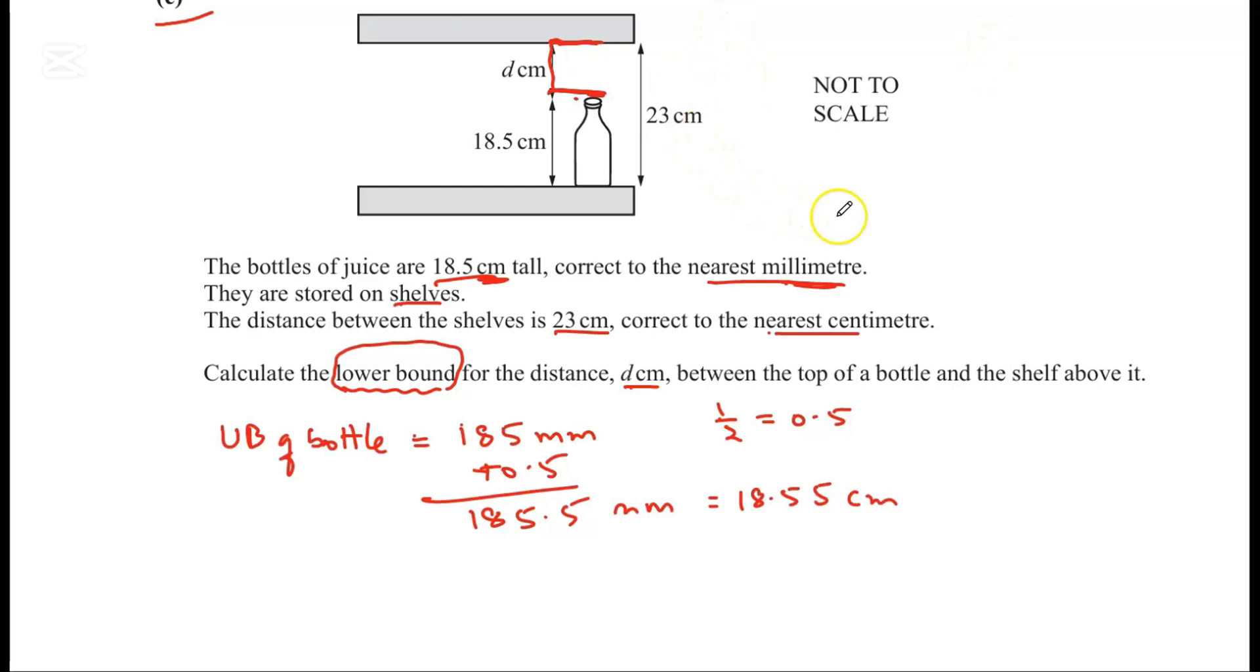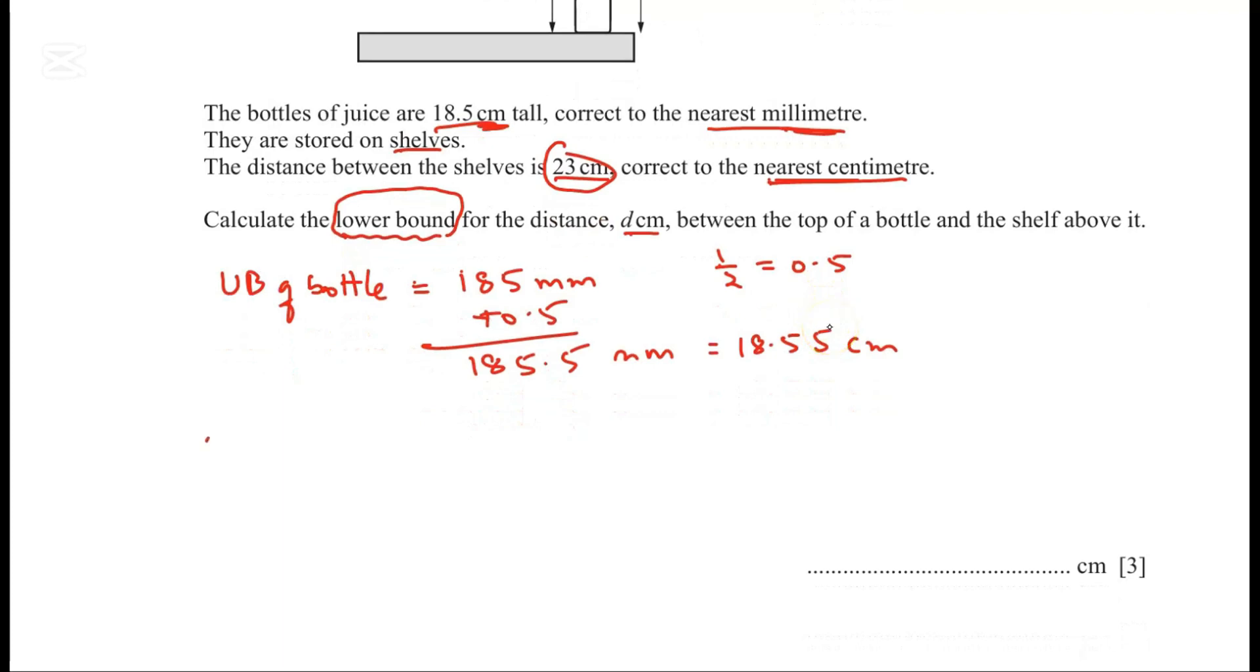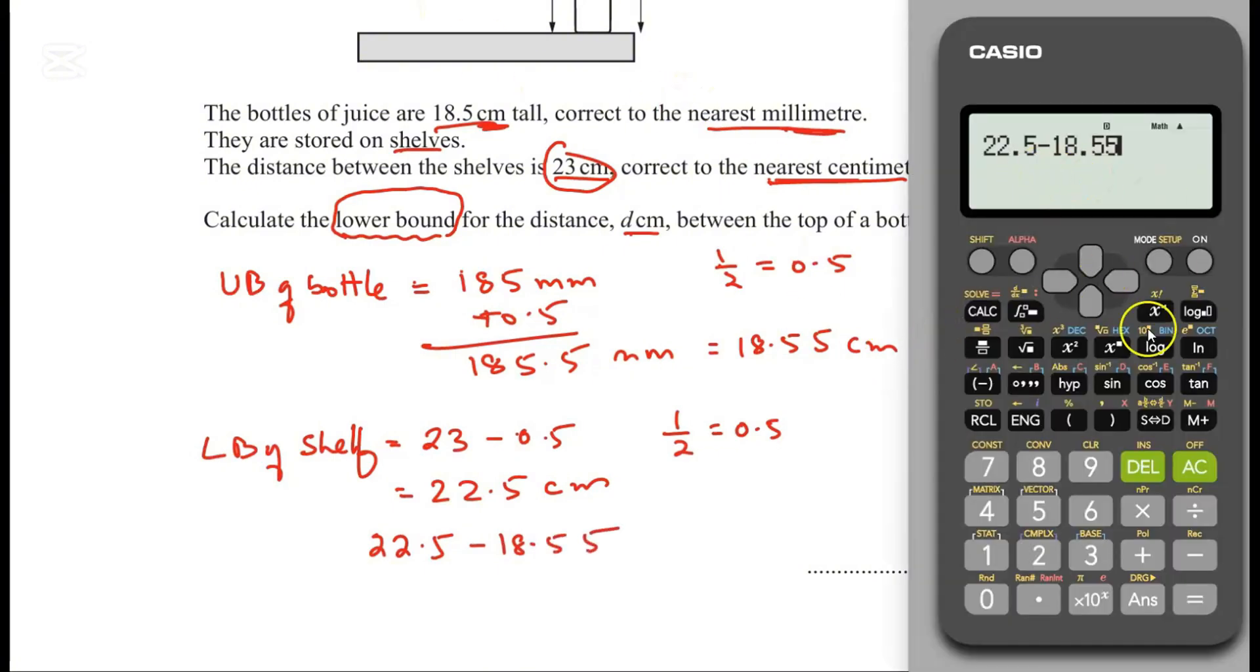Now let's calculate the lower bound of the shelf. The shelf is 23 centimeters, already in nearest centimeter, so no conversion needed. The lower bound is 23 minus 0.5 equals 22.5 centimeters. Now find the difference: 22.5 minus 18.55 equals 3.95 centimeters.